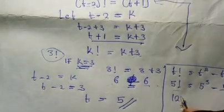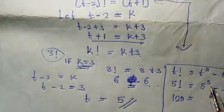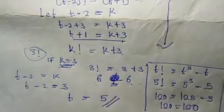5 factorial is equal to 120. t raised to the power of 5 is equal to 125, and we have minus 5 here. Therefore, we have 120 is equal to 120. So, t is definitely equal to 5 since it satisfies the equation.